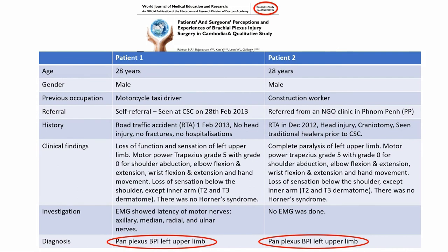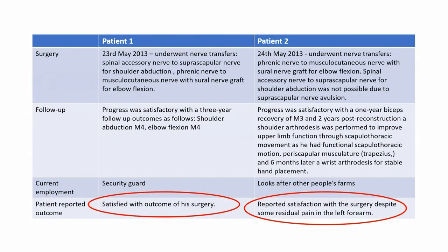This slide shares the demographics of the two patients. You can see they both suffered panplexus brachial plexus injury of their left upper limb, and both patients underwent nerve transfer surgery.